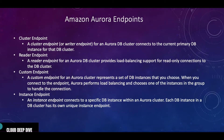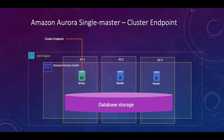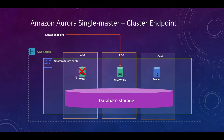In case of any failover, your cluster endpoint will always point to your writer node so you can perform write operations. But in case of failover, one of the read replicas will be promoted to writer node, and your cluster endpoint will start pointing to the new writer node. This happens behind the scenes because the cluster endpoint is a DNS — Aurora automatically points this DNS from the failed writer node to the new writer node.